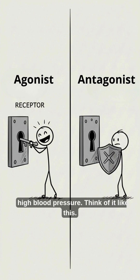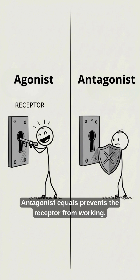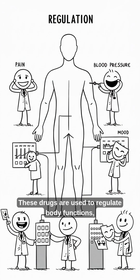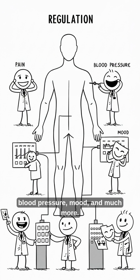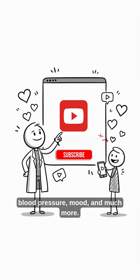Think of it like this: agonist equals turns the receptor on; antagonist equals prevents the receptor from working. These drugs are used to regulate body functions like pain, blood pressure, mood, and much more.